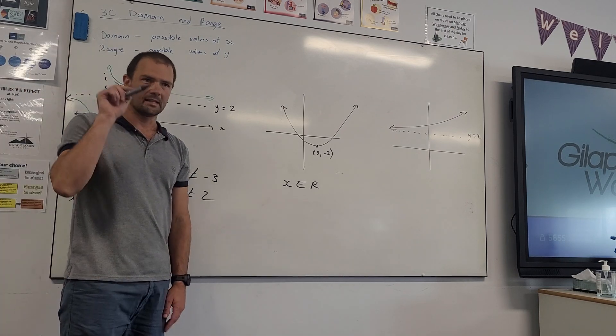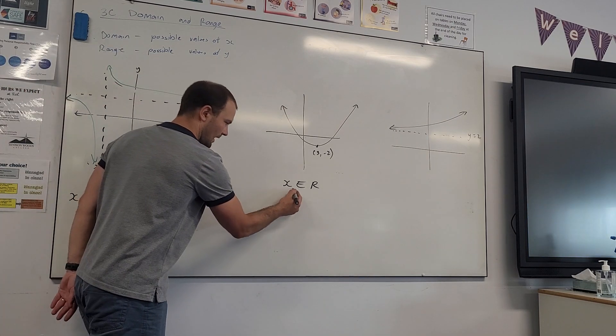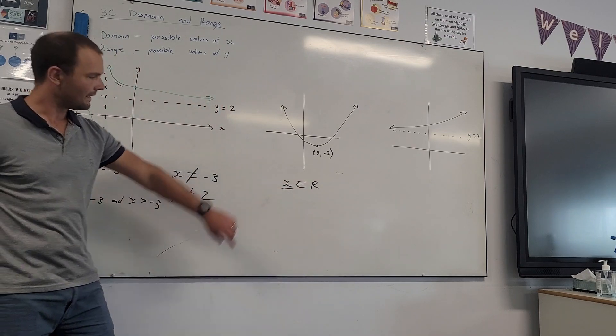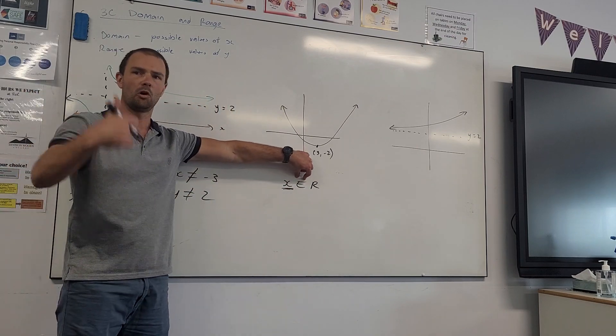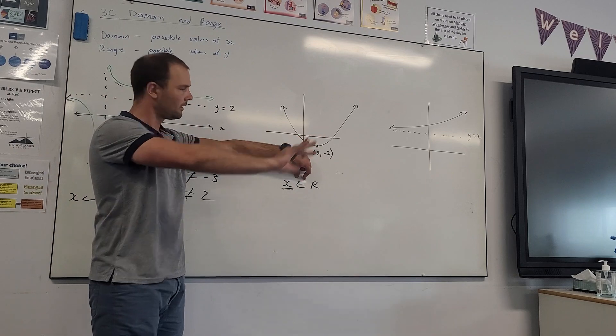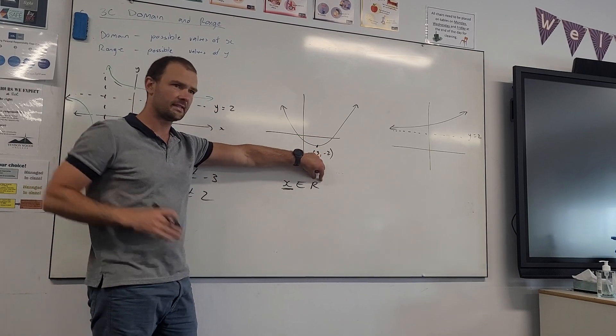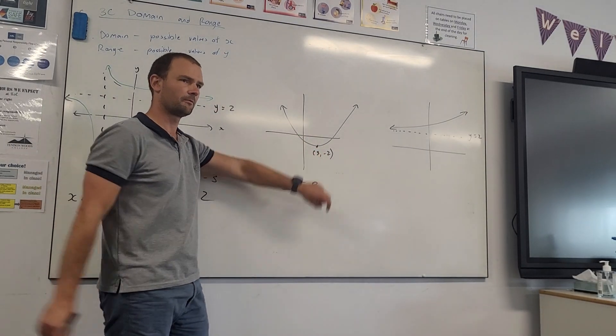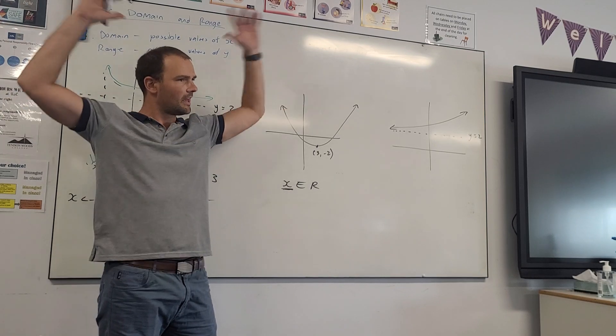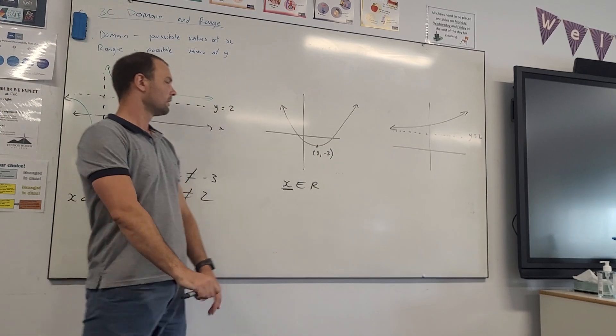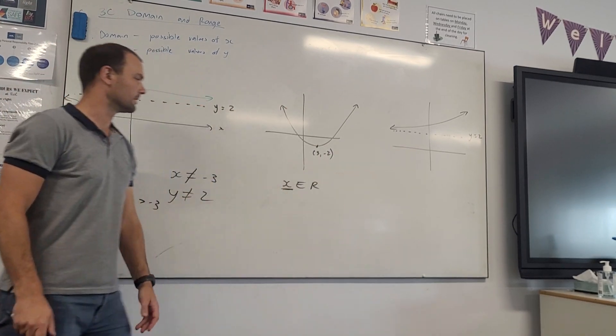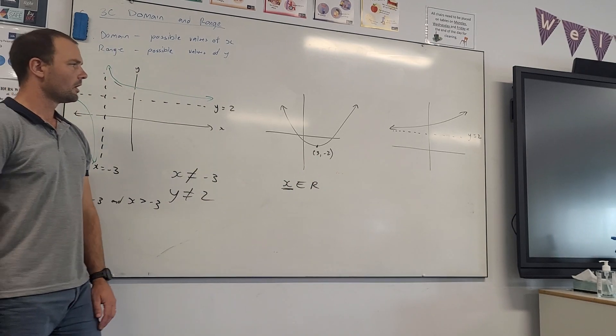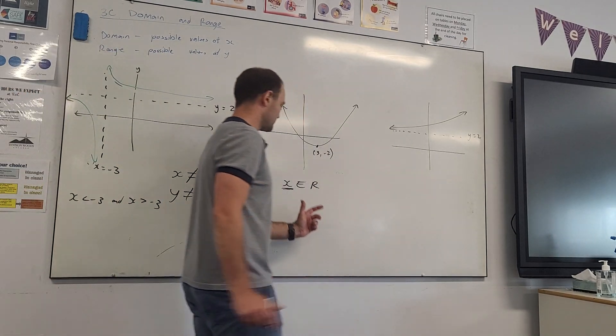What that means, literally, x, our variable, epsilon means belongs to, it's a part of, and r means the set of all real numbers, from negative infinity to positive infinity, every number that you can count, the set of all real numbers. That's the domain.